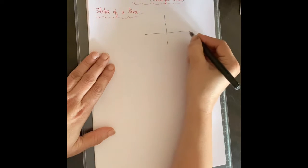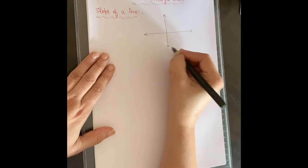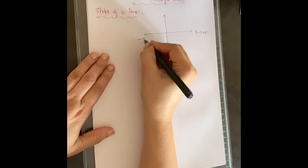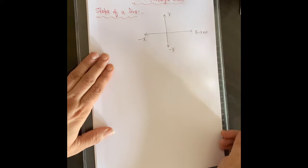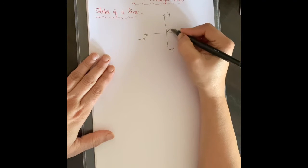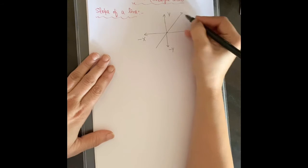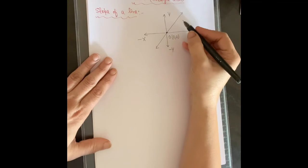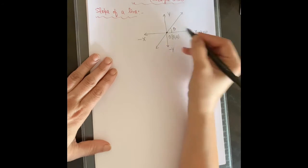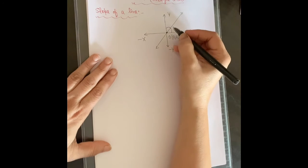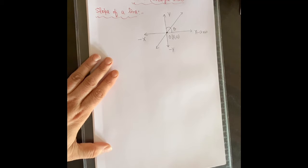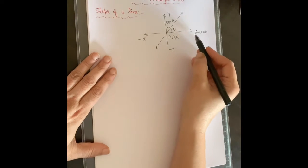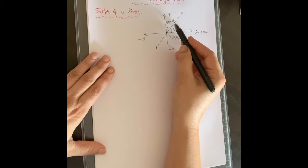As you know, all of you are aware of the Cartesian plane. This is the x-axis, this is the negative x-axis, this is the y-axis, and this is the negative y-axis. If a line passes through the origin with coordinates (0,0) and makes an angle theta with the x-axis, then with the negative x-axis the angle would be 90 minus theta.